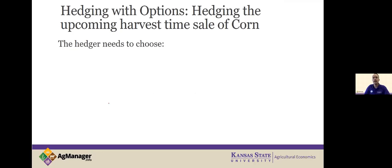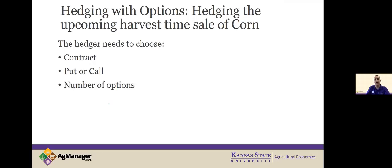The best way to use that background is to walk through an example. We've got a corn producer that wants to use options to hedge against price risk of the sale of corn. What do we need to know? We need to pick a contract — which futures contract best matches when I want to market my grain. Do I need a put or a call? How many options do I need to cover my position? And what strike price is appropriate?